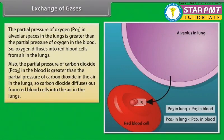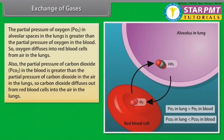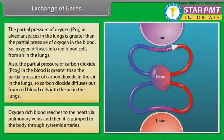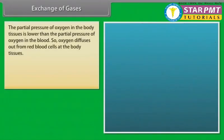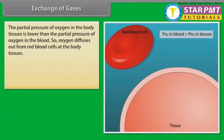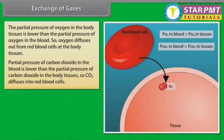So carbon dioxide diffuses out from red blood cells into air in the lungs. Oxygen-rich blood reaches the heart via pulmonary veins and then is pumped to the body through systemic arteries. The partial pressure of oxygen in the body tissues is lower than the partial pressure of oxygen in the blood, so oxygen diffuses out from red blood cells at the body tissues.